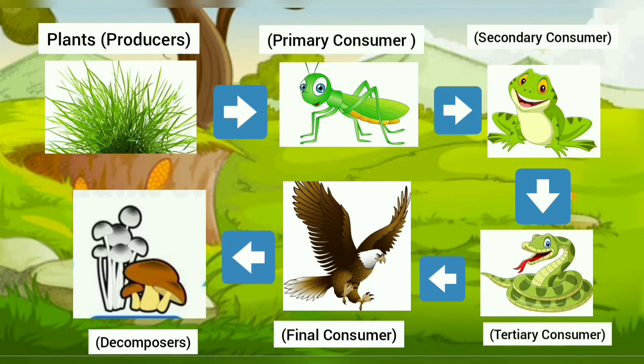The last part that makes the food chain are the decomposers. They are organisms like worms, fungi, and bacteria. They recycle and convert dead matter into humus, which mixes with the soil and provides the necessary nutrients for plants to grow.